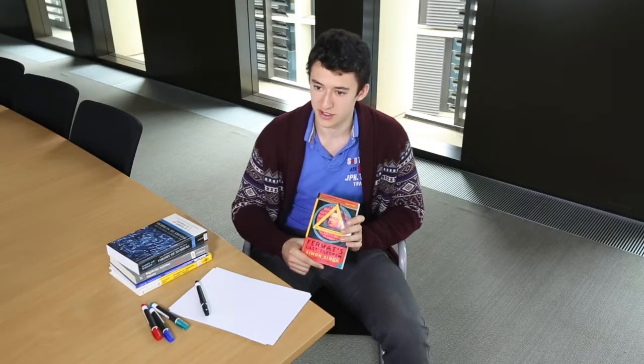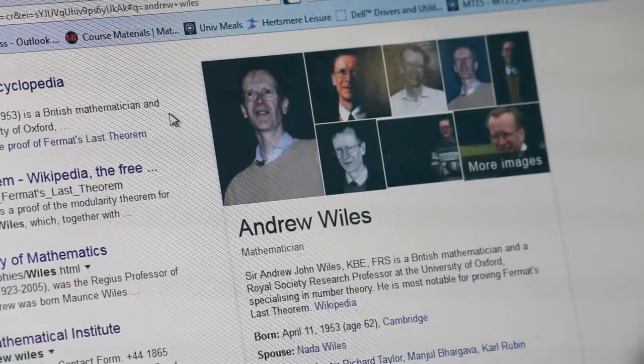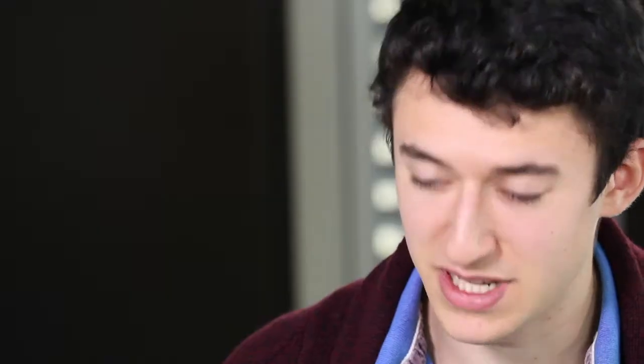The book is also a lot about Andrew Wiles's personal struggle. He wanted to be the one to solve the problem. He spent six years solving the problem, announced that he'd proved it. The whole mathematical world was celebrating it, only for a problem to be discovered in his proof but eventually he managed to prove it again to much celebration.